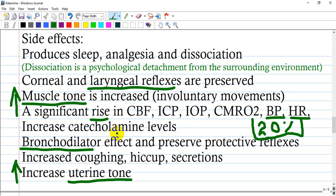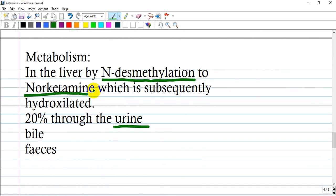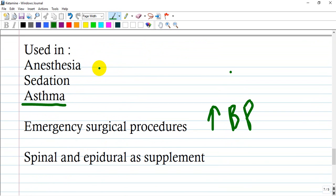Bronchodilator effect which preserves protective reflexes and increases uterine tone. Metabolism is mainly in liver by N-demethylation to norketamine which is subsequently hydroxylated. It is secreted in urine, bile and feces.